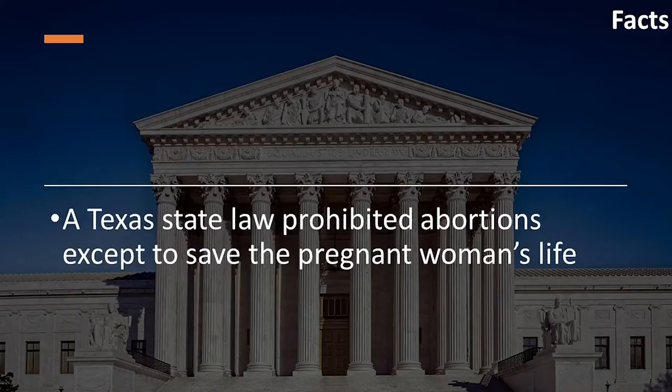The facts of the case are rather simple. A woman named Norma McCorvey sought to obtain an abortion. However, in her home state of Texas, it was illegal to do so unless it was to save the life of the mother. So she filed a lawsuit. And by the way, courts kept McCorvey's name private, calling her Jane Roe as the lawsuit proceeded, hence the name Roe versus Wade.